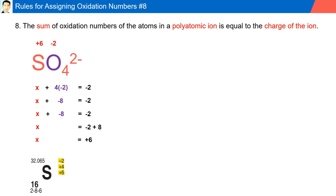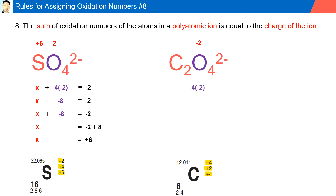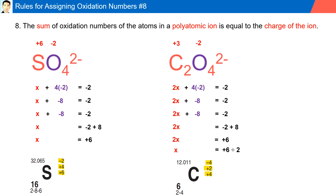The oxidation state for sulfur is plus six. Next, we have C2O4 2−. Carbon can have multiple oxidation states; solving for carbon, we have a plus three charge. Even though plus three is not listed on the chemistry reference table as an oxidation state for carbon, it can still exist — please be aware of this.